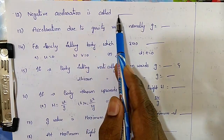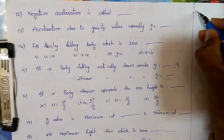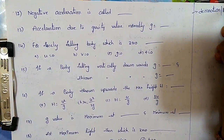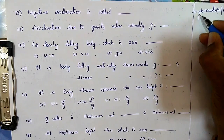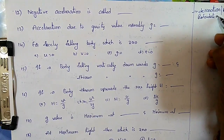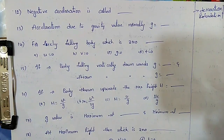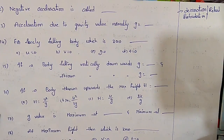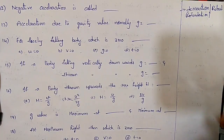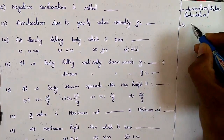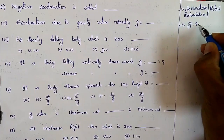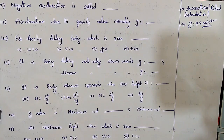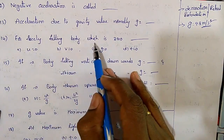Negative acceleration is called deceleration or retardation. The acceleration due to gravity, g, is equal to 9.8 meters per second squared — the units are very important.